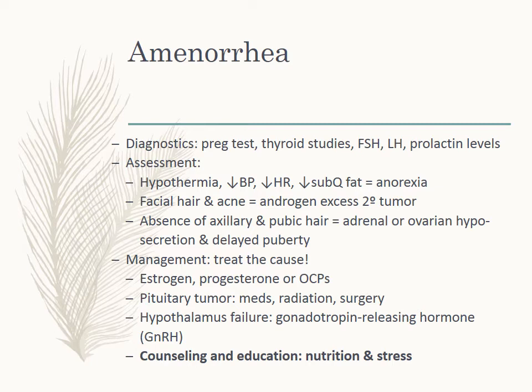Diagnostics: we're going to do a pregnancy test, look at thyroid studies, FSH and LH, and prolactin levels. We're going to assess for hypothermia, decreased blood pressure, decreased heart rate, and decreased subcutaneous fat — and then we'll think about anorexia. What about facial hair and acne — it could be an androgen excess secondary to a tumor. Absence of axillary or pubic hair may indicate adrenal or ovarian hyposecretion and delayed puberty. We're going to treat the cause because most causes are reversible. Treatments include estrogen, progesterone, oral contraceptives, and for a pituitary tumor — medications, radiation, or surgery may be indicated. If it's hypothalamus failure, we'll administer some gonadotropin-releasing hormone.